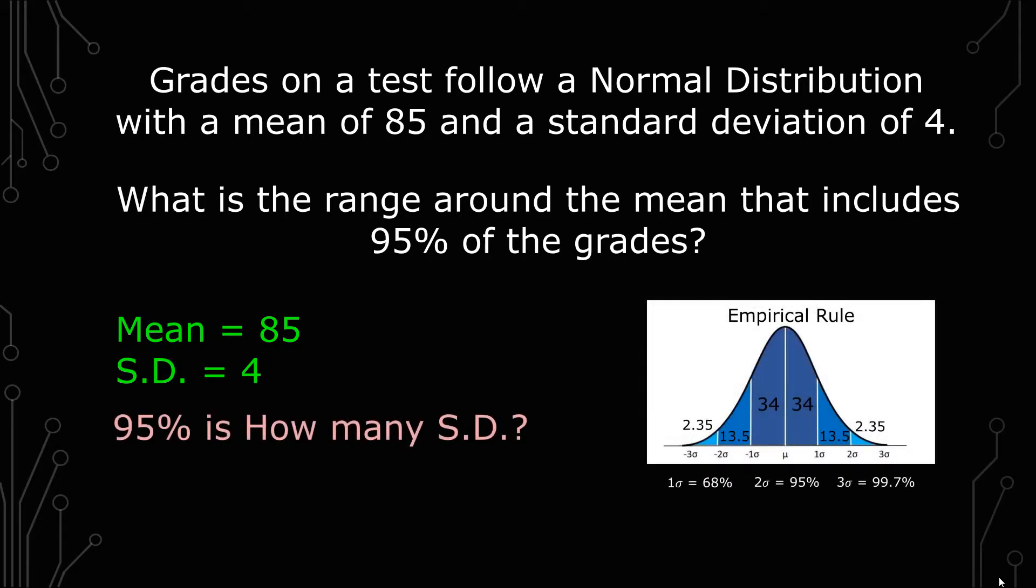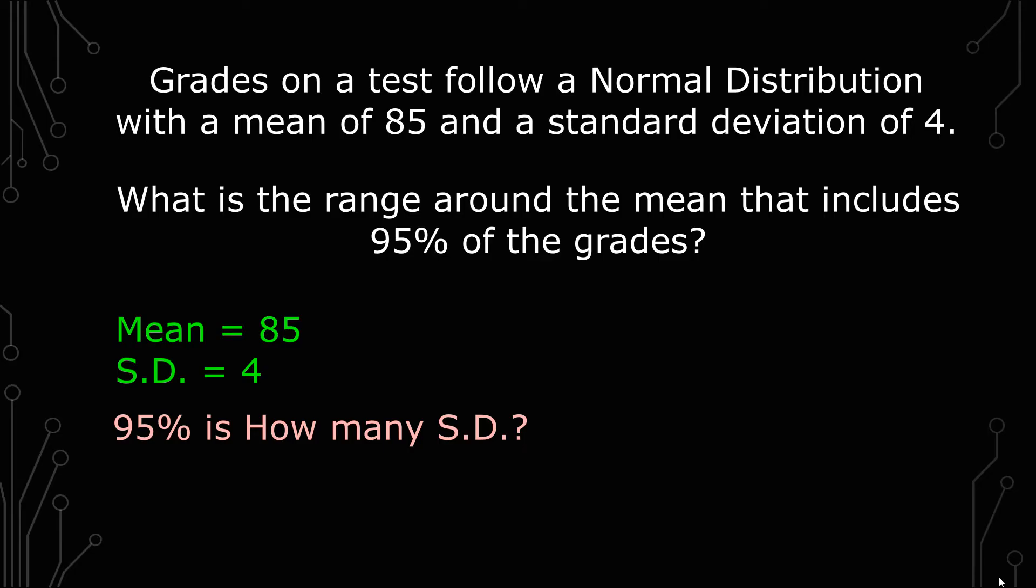When we review the empirical rule, we understand that it's two standard deviations that cover 95% of the data. It's just a matter of adding and subtracting from the mean.